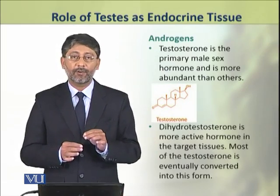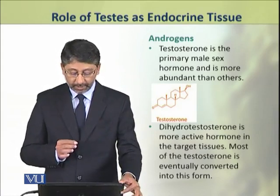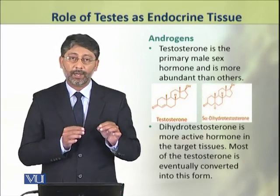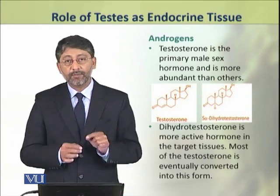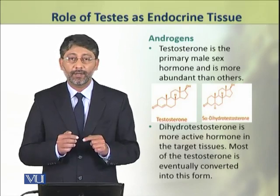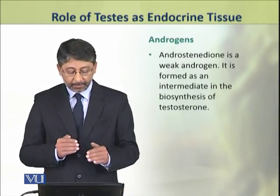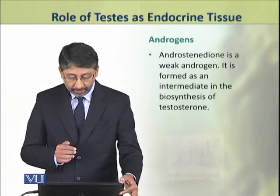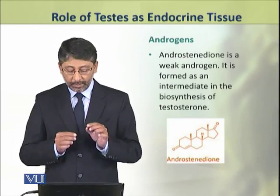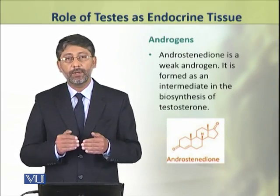Androgens include three major hormones. Testosterone is the most abundant of the three. Dihydrotestosterone is the more active hormone in the target tissues, and most of the testosterone is converted into this form by the target cells. The third type, Androstenedione, is a weak androgen formed as an intermediate in the biosynthesis of testosterone.